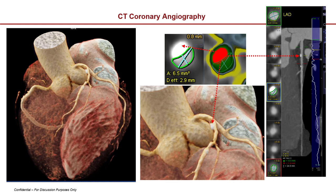Coronary angiography is a very powerful tool because it allows us to identify areas of disease processes. In this picture I have an example of a calcification, and I can measure down to the millimeter how large that calcification is and how narrow the lumen of that vessel is becoming. We want to identify if there's a stenosis in any of these vessels that's 50% or greater — that's the goal of CT and cardiac imaging.